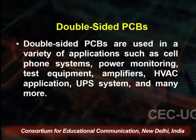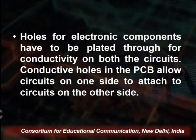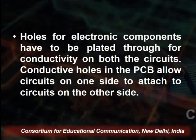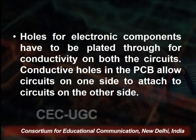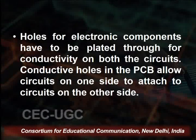Double-sided PCBs have one base substrate with conductive layers on both sides. The solder mask is also applied on both sides of the board. The double-layer PCB therefore has one base substrate, two copper layers on both sides, and two solder masks on both sides, so components can be connected on both sides. Holes for electronic components are plated through for conductivity on both circuits, and conductive holes allow the PCB circuit from one side to attach to the circuit on the other side.